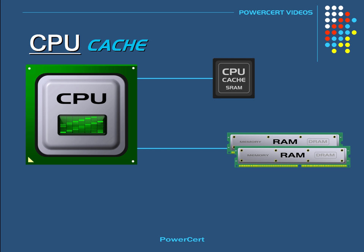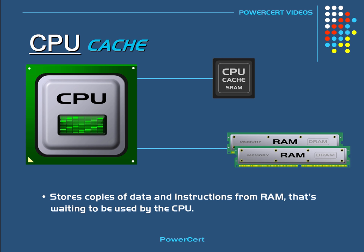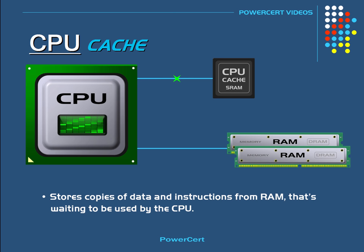The CPU cache is the CPU's internal memory, and its job is to store copies of data and instructions from RAM that are waiting to be used by the CPU. The cache holds common data that it thinks the CPU is going to access over and over again. When the CPU needs to access certain data, it always checks the faster cache memory first. If the data isn't there, the CPU has to go back to the slower primary memory, or RAM, to get the data it needs.